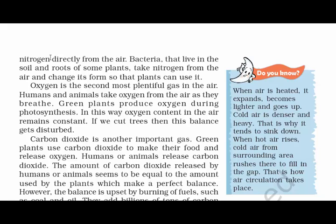Let's talk about nitrogen. It comes directly from the air. The bacteria that live in the soil and roots of some plants take nitrogen from the air and change its form so that plants can use it. Talking about oxygen, it is the second most plentiful gas in the air. Humans and animals take oxygen from the air as they breathe. Green plants produce oxygen during photosynthesis, and in this way oxygen content in the air remains constant.